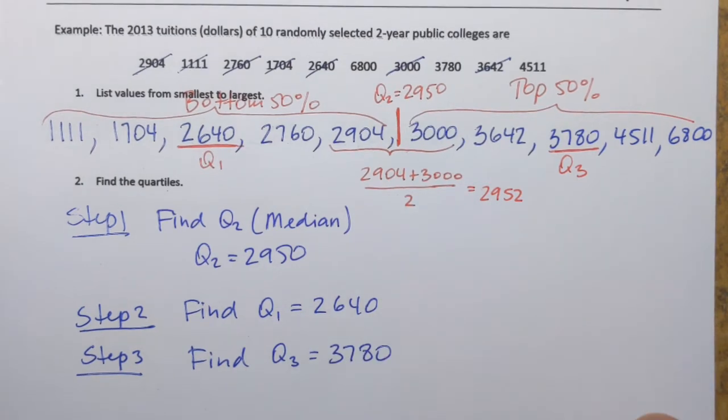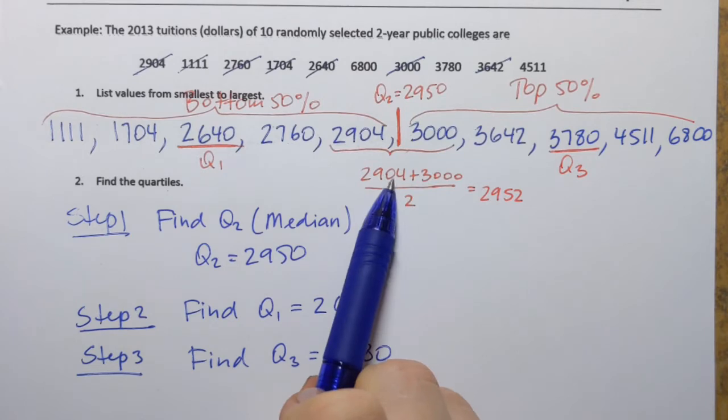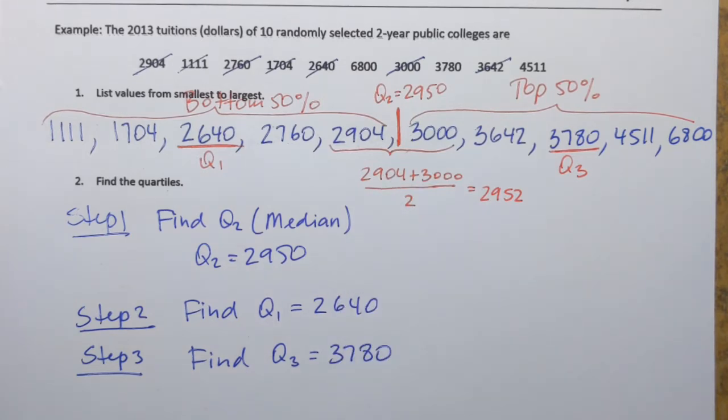So I'll record it here. So that's how you find Q1, Q2 and Q3. Start with the median with Q2. Next, we're going to calculate the IQR.